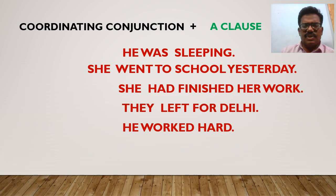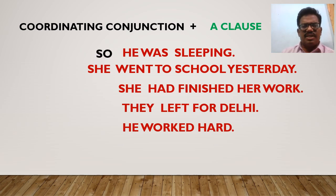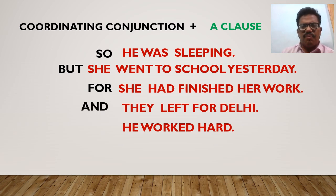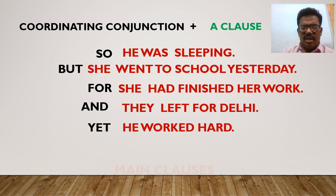Now let us see what happens to the clauses when coordinating conjunctions are placed before them. Here are the same clauses, and now let us place some of the coordinating conjunctions before them. 'So' is placed before the first clause, 'for' is placed before the second clause, 'and' is placed before the third clause, 'but' is placed before the fourth clause. So whenever we keep the coordinating conjunctions before the same clauses, all these clauses will be main clauses.